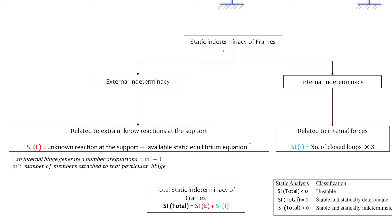The static indeterminacy of frames depends on the external indeterminacy and the internal one. The external indeterminacy equals the total reactions at the supports minus the available static equilibrium equations, which is usually 3, plus the summation of additional equations from any internal hinges. The number of equations generated by an internal hinge is the number of members attached to that hinge minus 1.